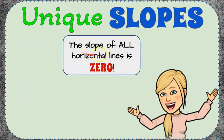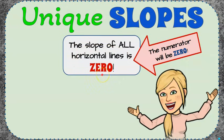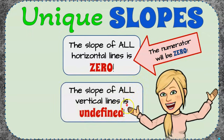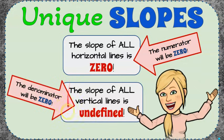Unique slopes: all horizontal lines have a slope of zero. Think about lying down — you have no rise, just a horizontal distance, so slope is zero. When you use the formula, the numerator will always come out to zero, meaning a zero numerator gives you a zero slope and a horizontal line. The slope of all vertical lines is undefined. The denominator when you use the formula will always be zero — a denominator of zero means undefined slope, which is the slope of a vertical line.